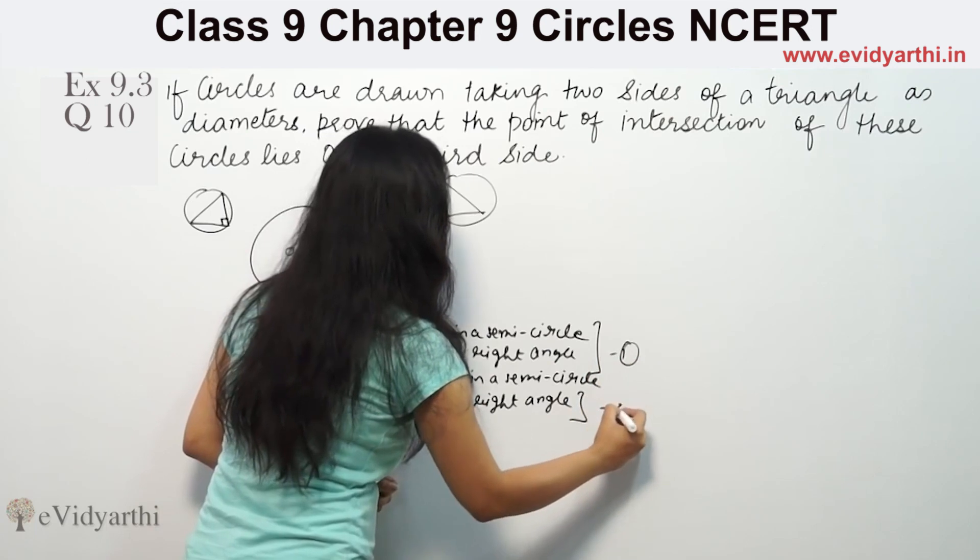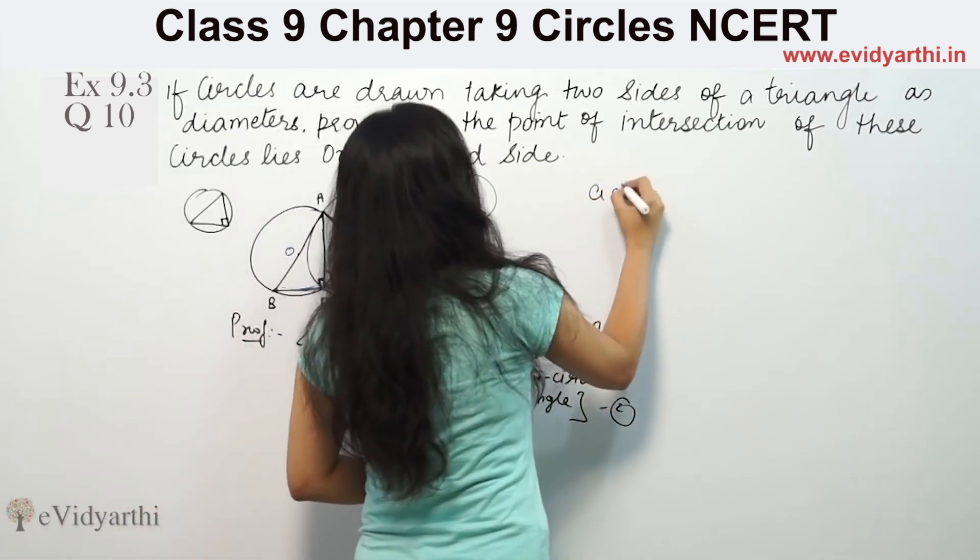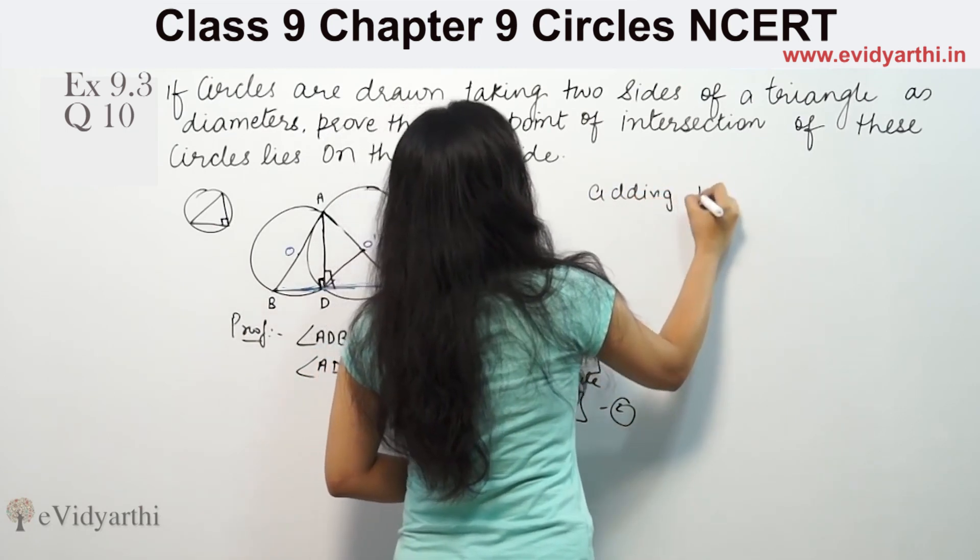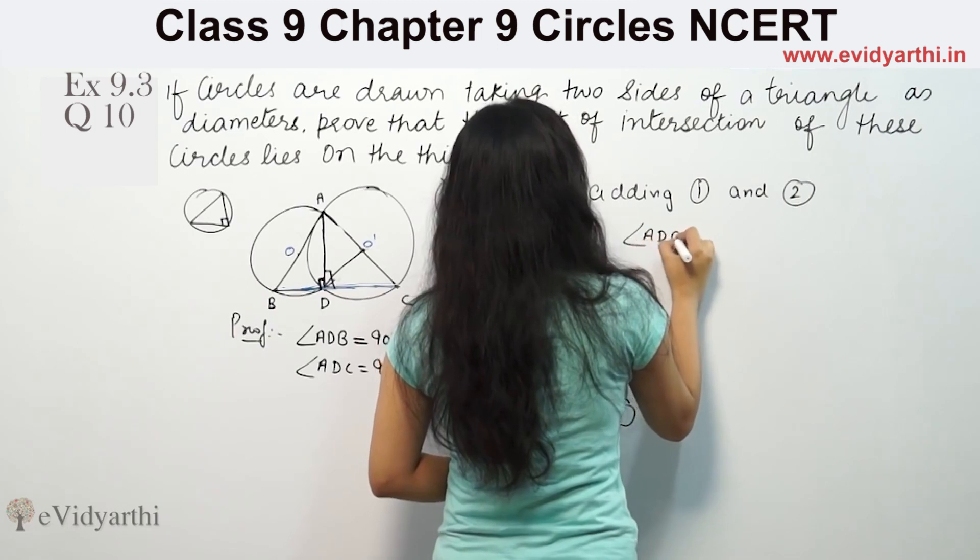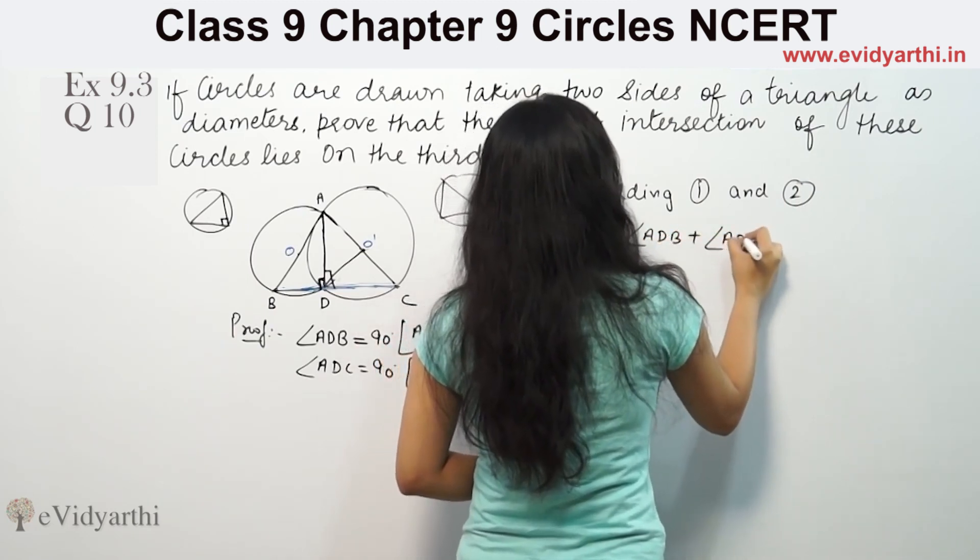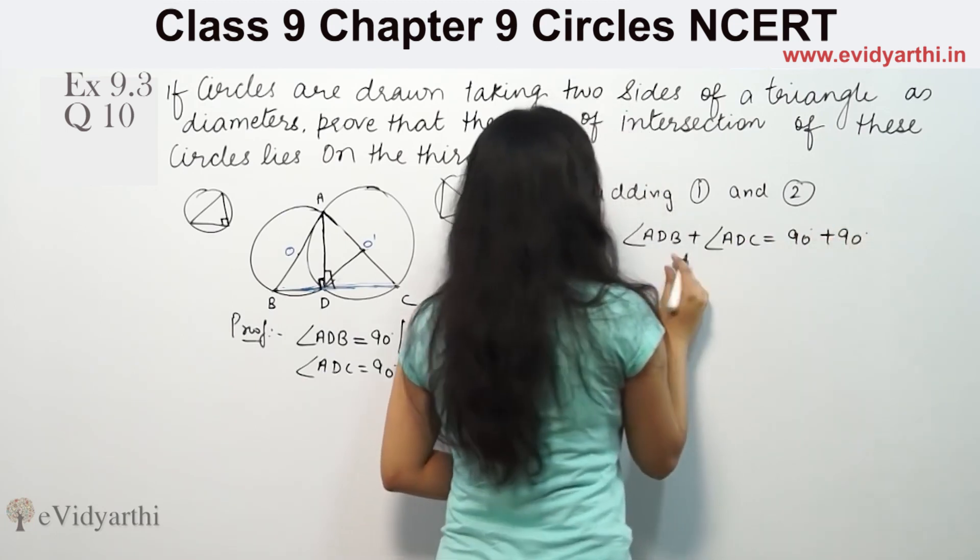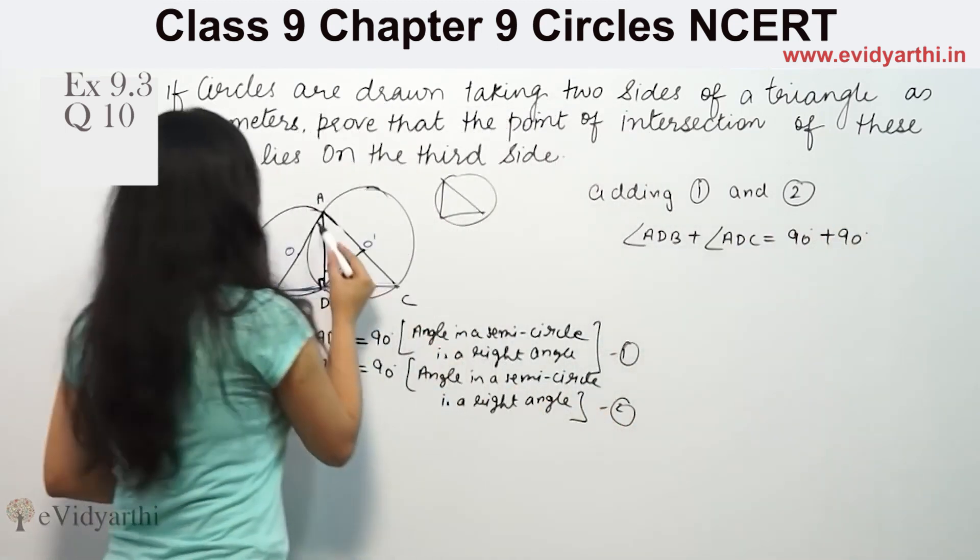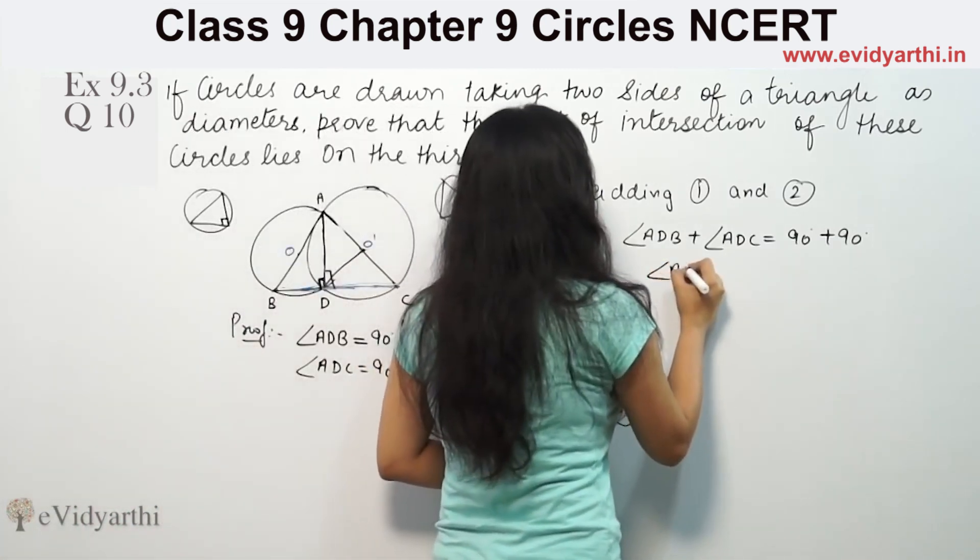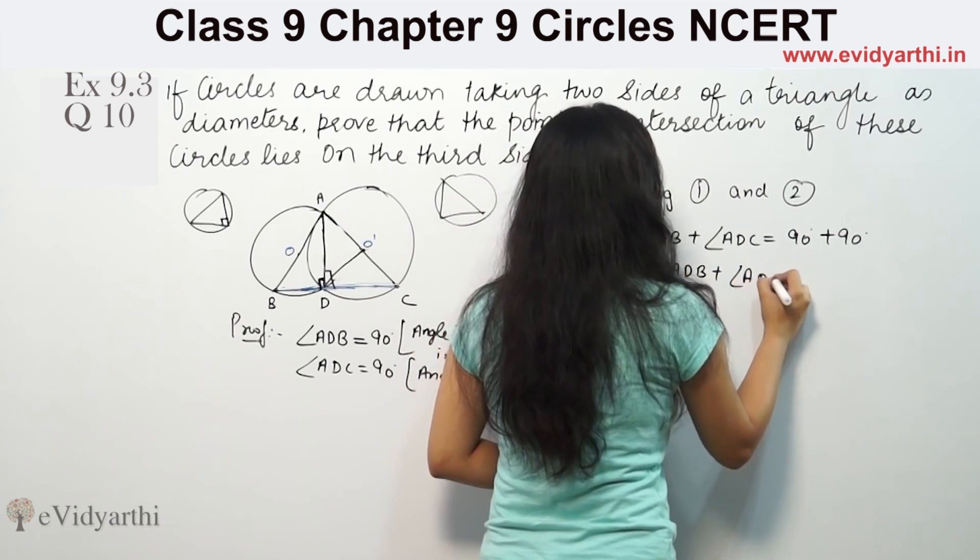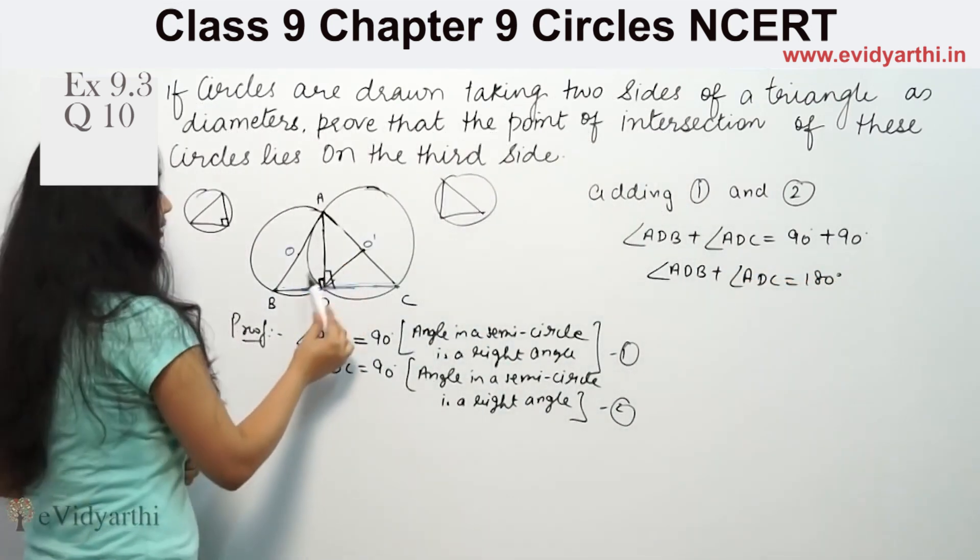So this is equation 1, this is equation 2. Now let's add the two equations. Adding first and second, we have angle ADB plus angle ADC is equal to 90 degrees plus 90 degrees, which equals 180 degrees.